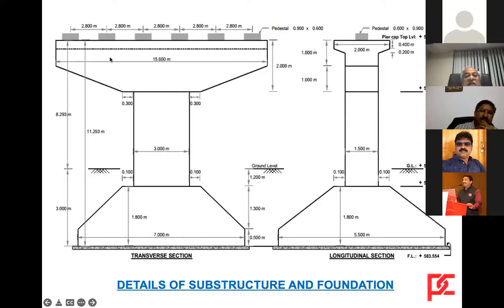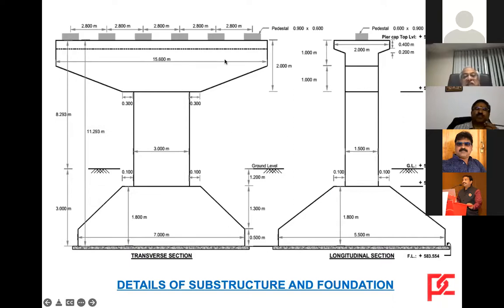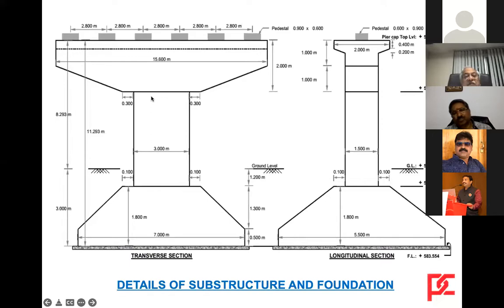The pier cap is 15.6 meters by 2 meters width and 2 meters depth. The pier is 3 meters by 1.5 meters rectangular RCC section. The pier cap is a precast RCC pier cap cast on the road, and after the pier foundation is done, it is lifted, placed, and grouted.